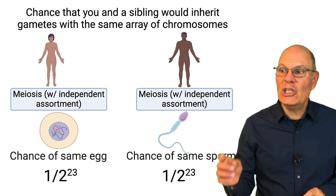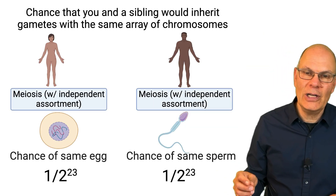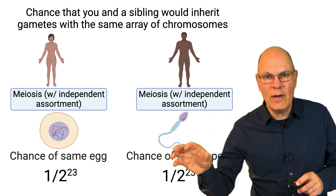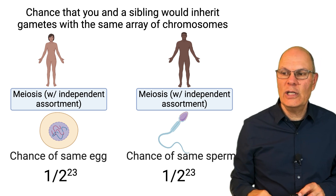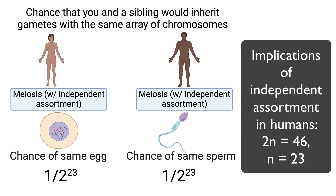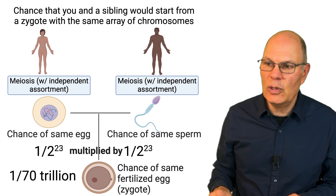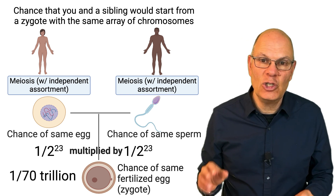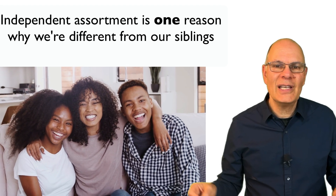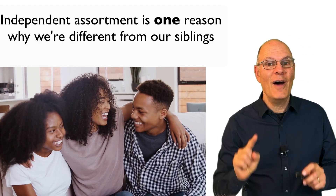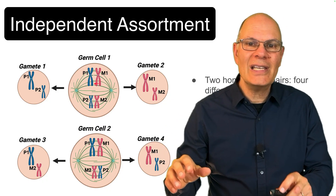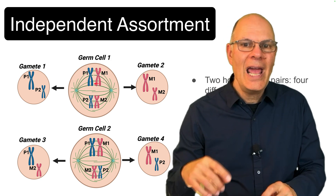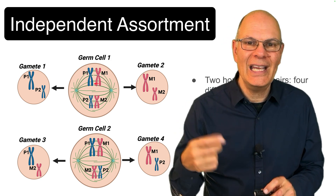So what's the chance that you and a sibling would have the same chromosomal inheritance — inheriting the same array of chromosomes from your dad's sperm and your mom's egg? Those are independent events. The same egg is 1 over 2 to the 23rd; the same sperm is also 1 over 2 to the 23rd. Multiply those together and that's 1 in 70 trillion. That's why meiosis is so phenomenal. This is independent assortment — what every chromosome does is independent of every other chromosome pair, and that creates tremendous diversity in the offspring.